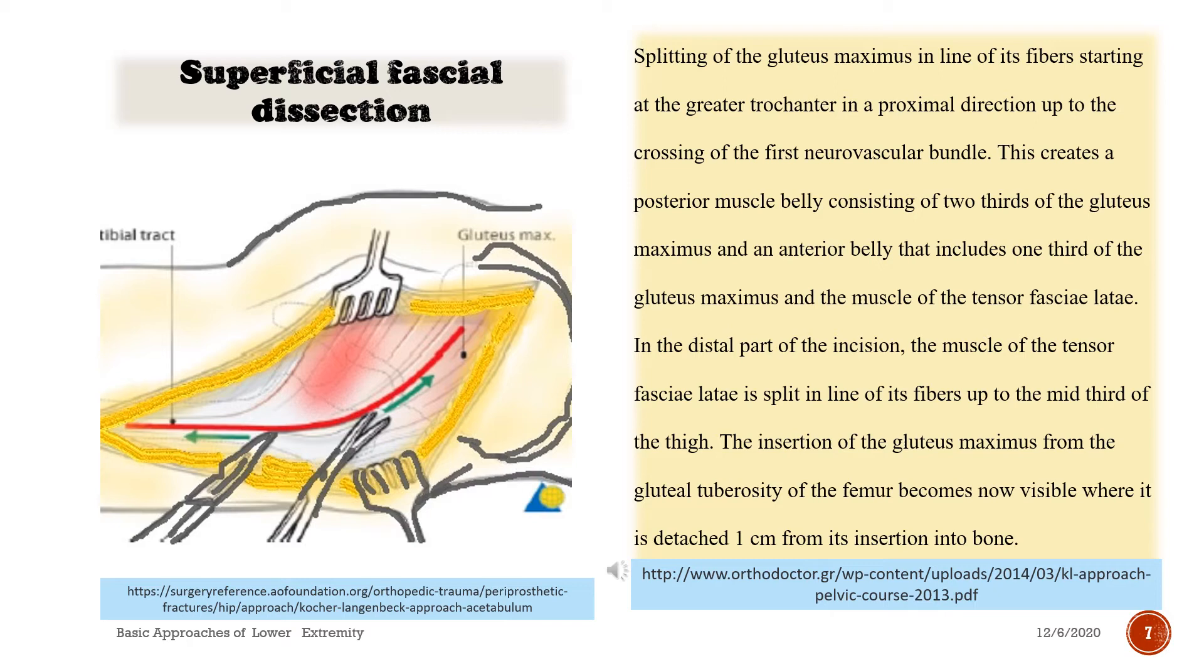Superficial fascial dissection: splitting of the gluteus maximus in line of its fibers starting at the greater trochanter in a proximal direction up to the crossing of the first neurovascular bundle. This creates a posterior muscle belly consisting of two-thirds of the gluteus maximus and an anterior belly that includes one-third of the gluteus maximus and the muscle of the tensor fasciae latae.